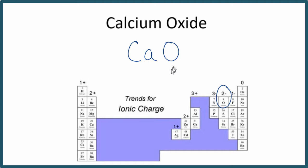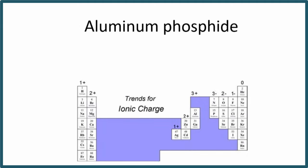Pause and give this one a try. We have aluminum and then phosphide. That's the phosphorus right here. We'll put a P. 3-plus. Phosphorus is 3-minus.